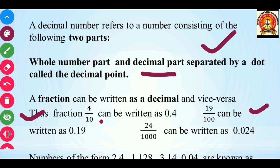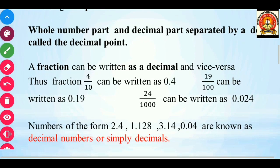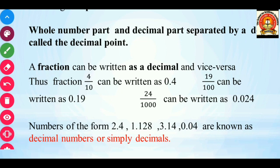And here we are having 19 upon 100. In the denominator, 2 zeros are there. So friends, you need to write the decimal after 2 digits from the right-hand side. In the same way, you are having 24 upon 1000. So here you are going to write it as 0.024.